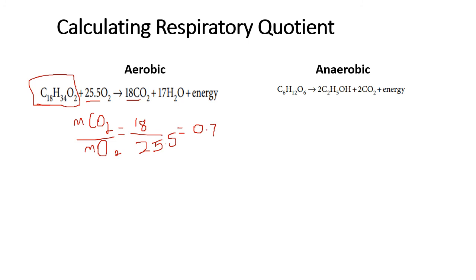Now let's look at the anaerobic side. If you're calculating the respiratory quotient for an anaerobic reaction, there is usually no oxygen. For example, with glucose fermenting to ethanol and CO₂, you use the same formula: moles of CO₂, which is 2, divided by moles of oxygen, which is 0. The answer is infinity — that's what you get for anaerobic. They don't usually ask you to calculate this, as the answers typically just come out the same.